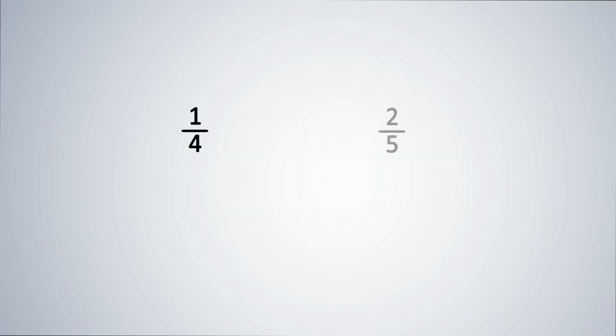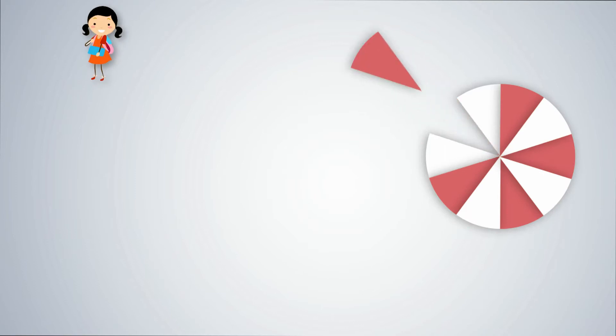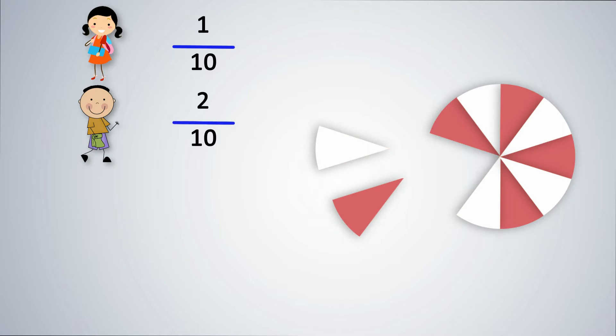Start by revising the concept of fractions. Here is a circle which is divided into 10 equal parts. If Mamta picks just one part, she has taken 1 out of a total of 10 parts, written as 1 upon 10. If Tony picks 2 parts, he has 2 upon 10 of the circle.